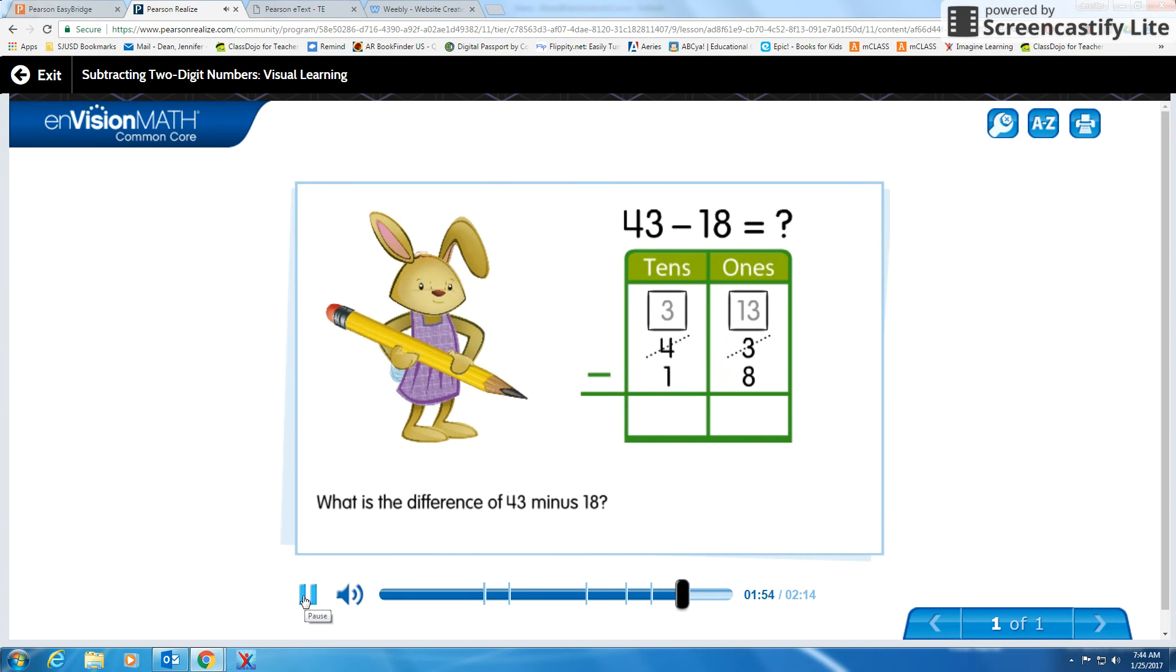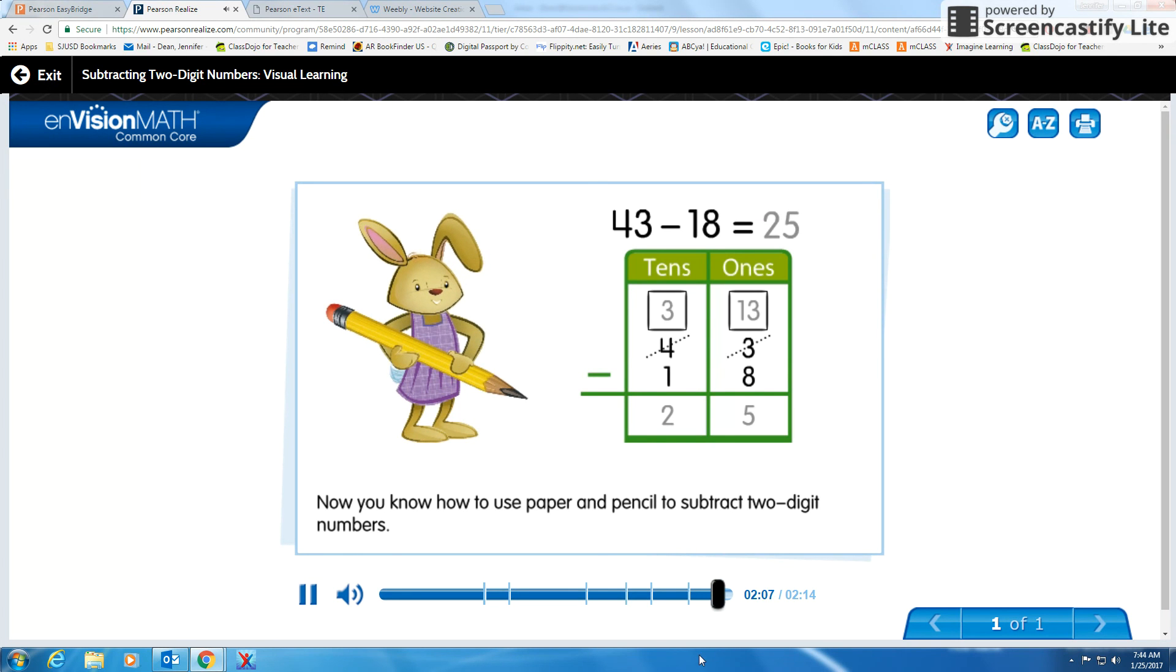What is the difference of 43 minus 18? 43 minus 18 is 25. Now you know how to use paper and pencil to subtract two-digit numbers.